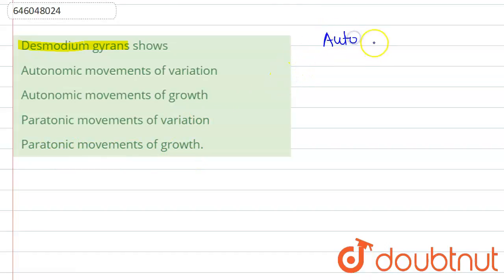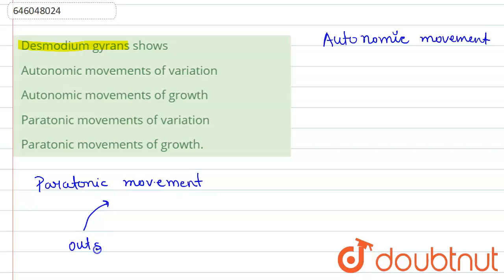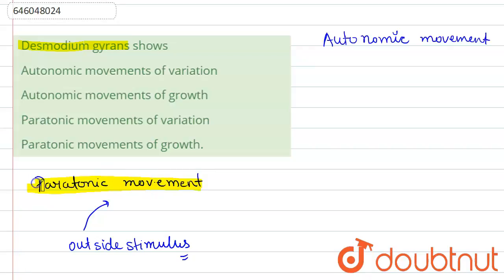We have two concepts: one is autonomic movement and the other is paratonic movement. What happens when we have any stimulus from the outside? When there is an outside stimulus, a movement takes place — such movement is known as paratonic movement.